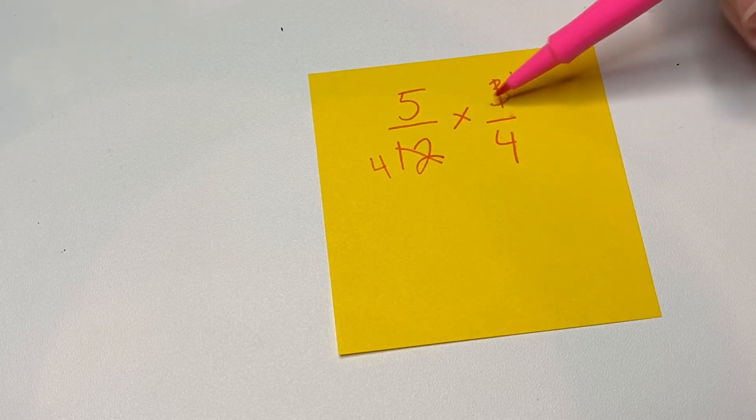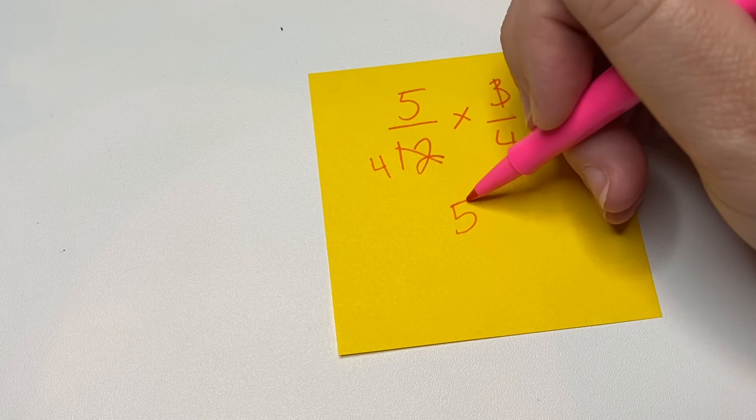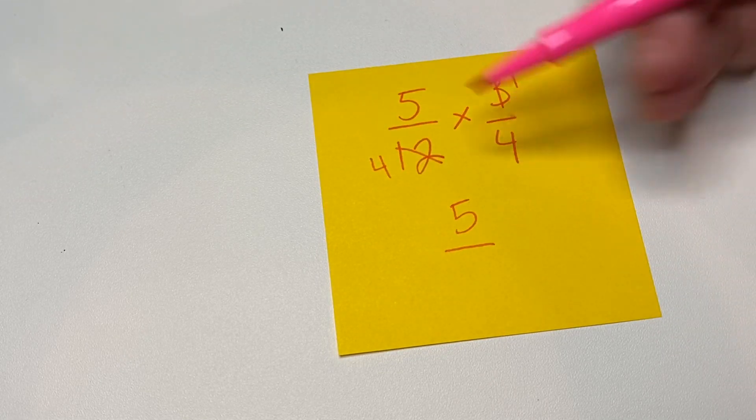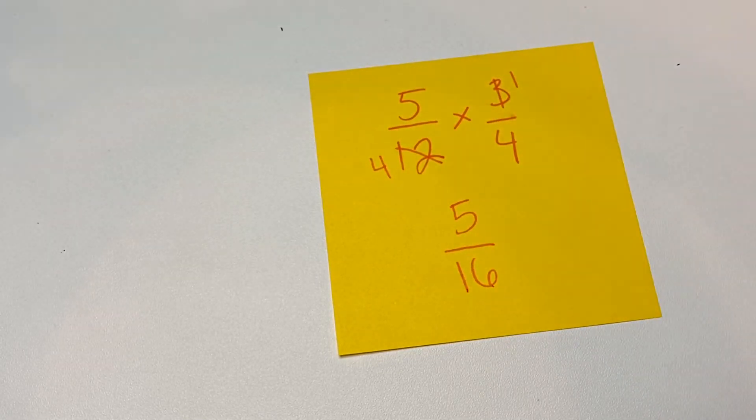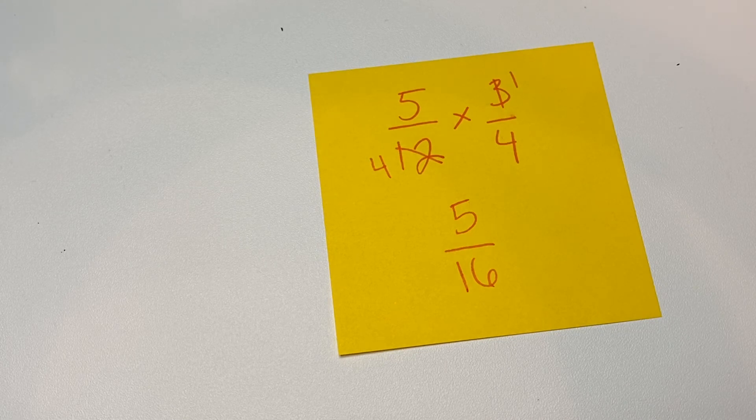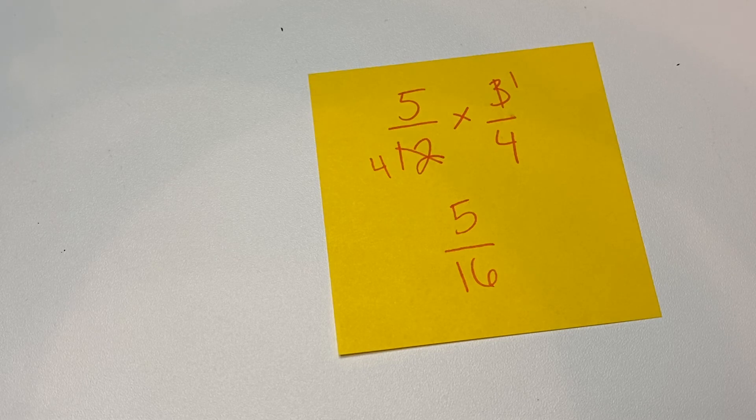We're going to do five times one, the numerator times the numerator, and four times four, 16. And you'll notice this is already in lowest terms because we already found the factors and did the simplifying by using the cancellation.